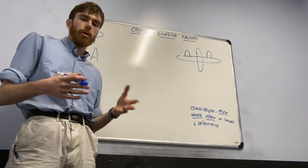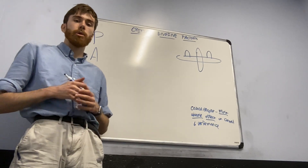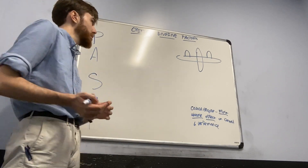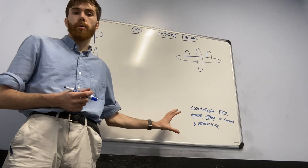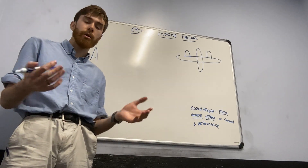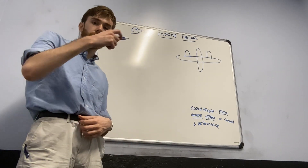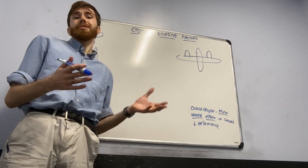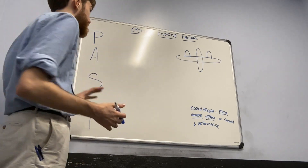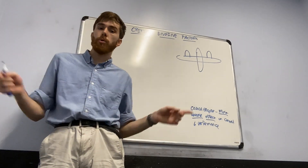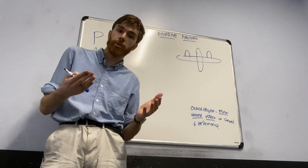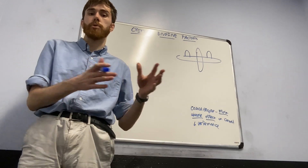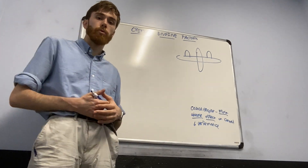The critical engine is the engine whose failure has the most adverse effect on control and performance. Remember, this applies to what is known as a conventional twin, or an aircraft whose propellers both rotate in the same direction. Counter-rotating twins don't experience these forces in the same way because both propellers are moving in opposite directions, which keeps the thrust lines close to the fuselage.